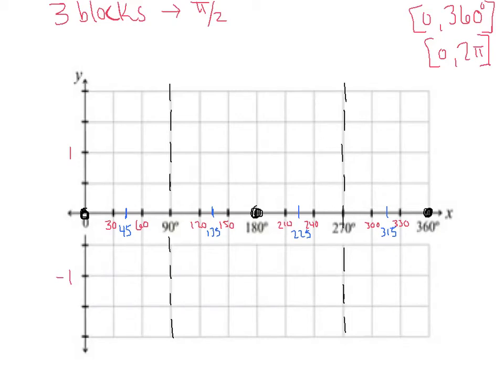The tangent of 45° has a value of 1, so the graph reaches a height of 1 there. We already said the tangent of 135° was negative 1, the tangent of 225° was positive 1, and the tangent of 315° was negative 1. And there you have it — that's enough information to go graph our tangent picture.